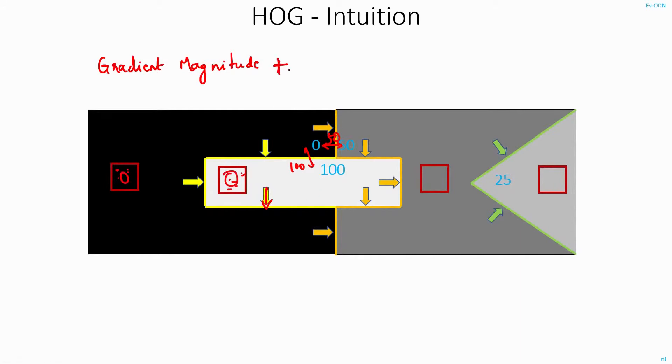HOG feature measures one more thing along with the gradient magnitude. It also tries to estimate the direction in which the magnitude is changing. In this case, the gradient magnitude changes in the y direction.